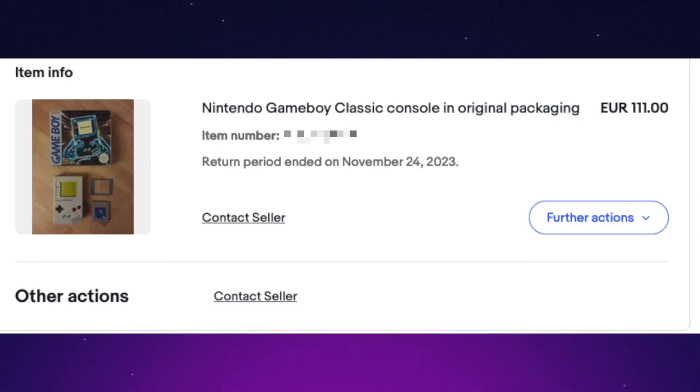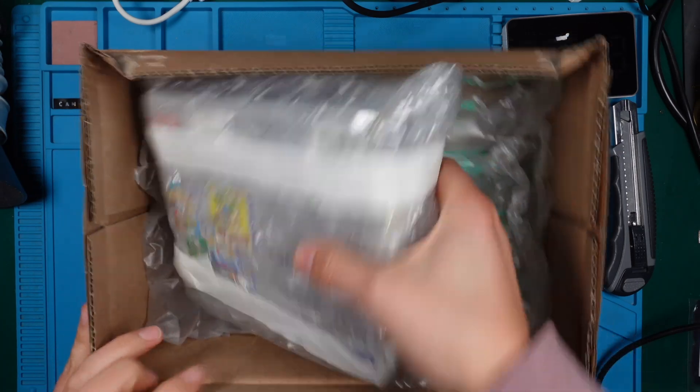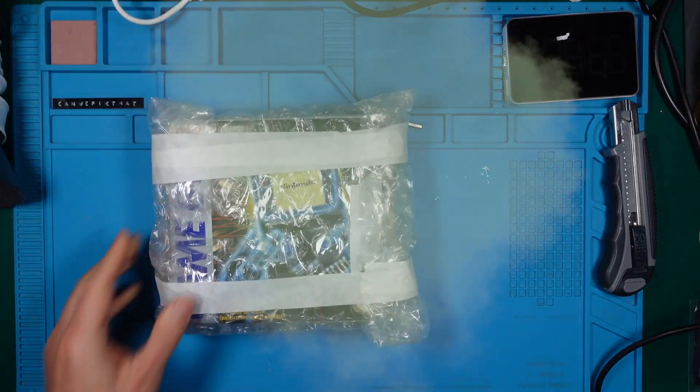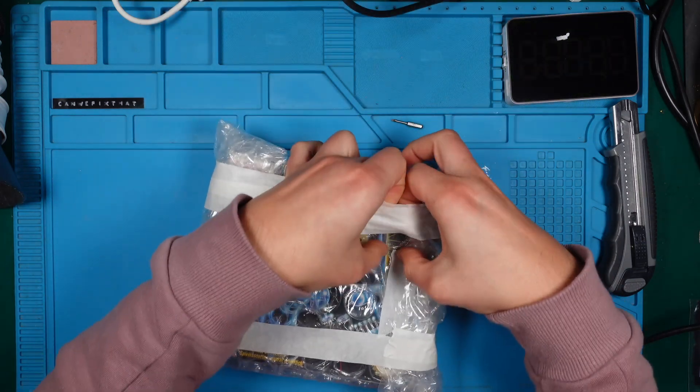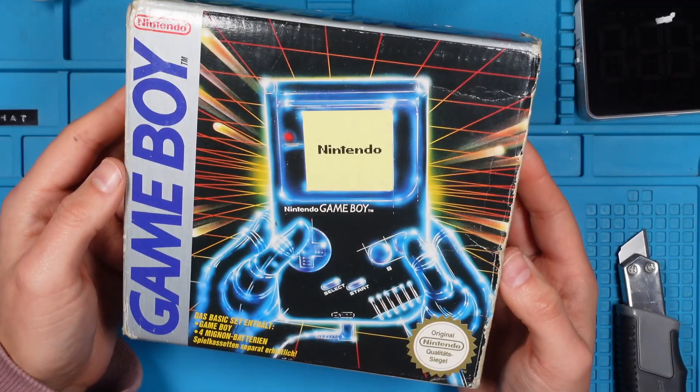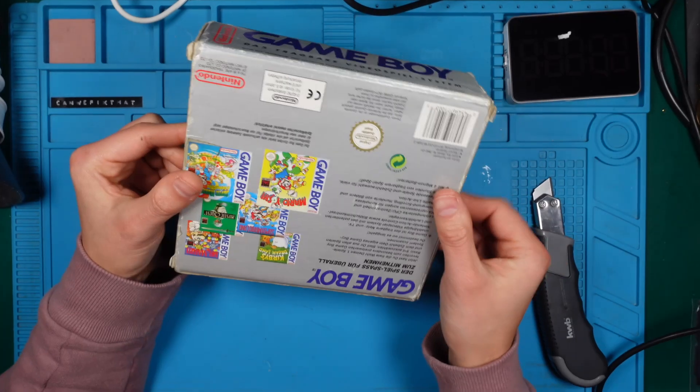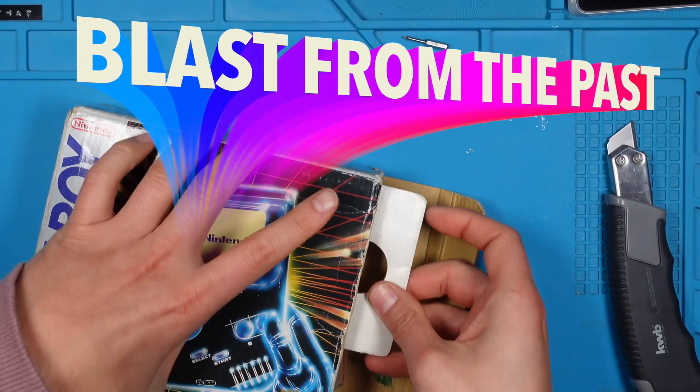I found this Game Boy on eBay for $120. Why did I choose this one? Because it's a perfect example of what I've been talking about. Let's see what I received. It seems well packaged so far and as you can see, the auction also included the original Game Boy packaging, which is quite nice. The package looks okay-ish, considering the fact that this item is more than 30 years old. That's probably much older than most of my viewers. What about you? What were you doing in 1993? Let me know in the comments.